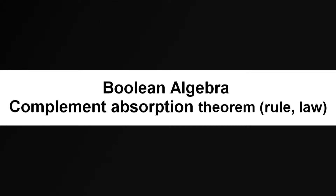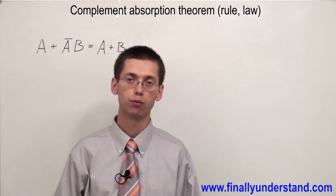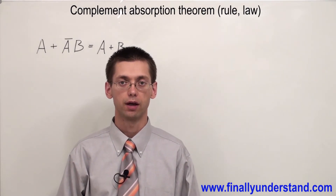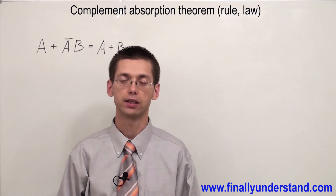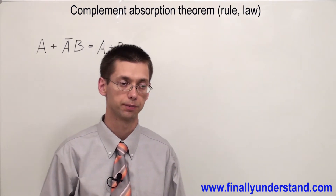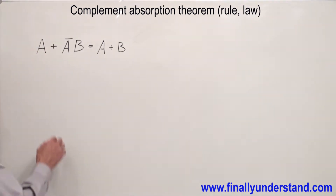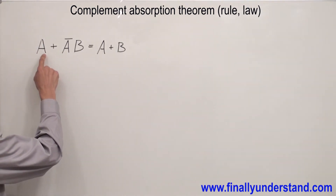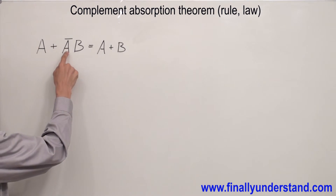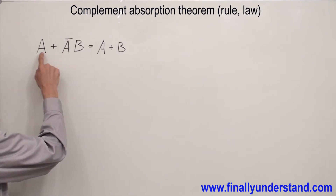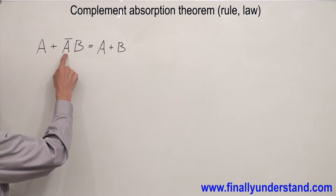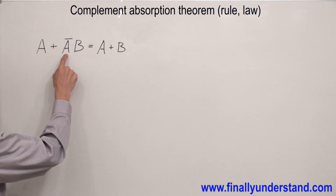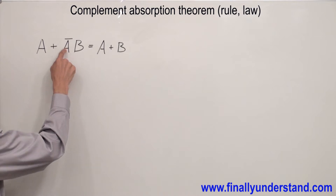The Complement Absorption Theorem states that anytime we have complements OR'd together and one of them is AND'd with something else, that complement is supposed to be dropped out. Let's take a look at this formula. We have complements A and A'. Both of them are OR'd together, but A' is AND'd with B. That's why this complement is supposed to be dropped out.